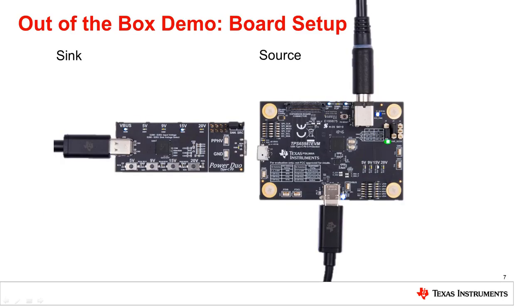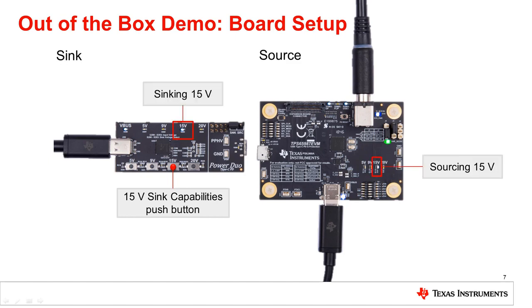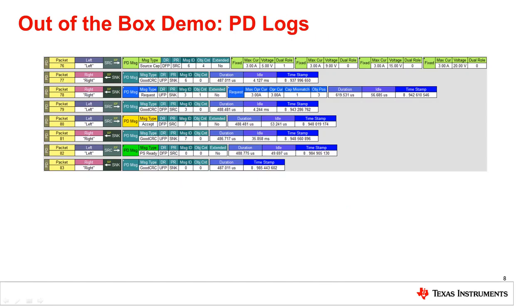Next we will demo the boards and their out-of-box configuration. The EVM comes with an out-of-box default flash image that can perform power delivery. When the EVM is connected to power it can act as a power source. We will use the sink board to demonstrate the power contract negotiation with the EVM. When the sink board is connected and the 15 volt contract button is pushed, the sink board can sink up to 15 volts. The 15 volt LEDs on the EVM and sink board show this contract. If we look at the PD logs we can also see this power negotiation taking place.